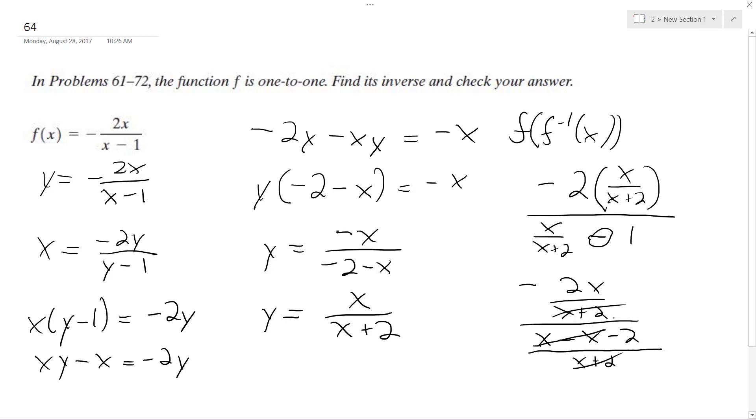These cancel out, x cancel out, this becomes negative 2x over negative 2. Those cancel out, we'll just get x out.